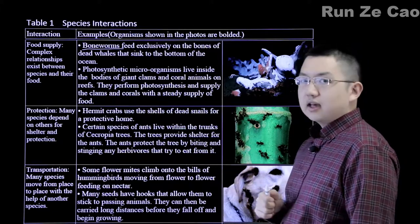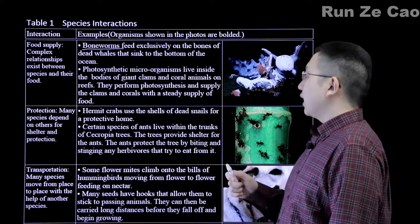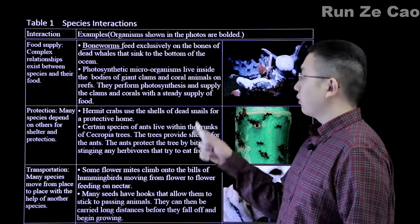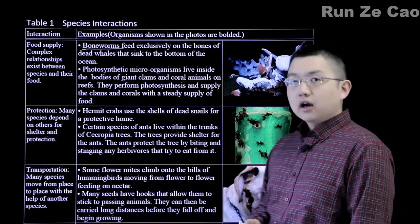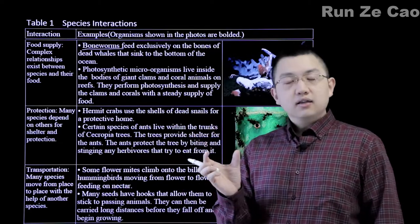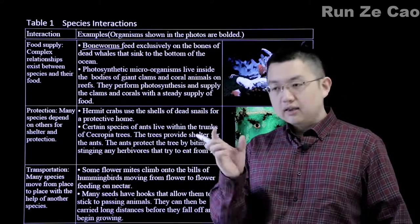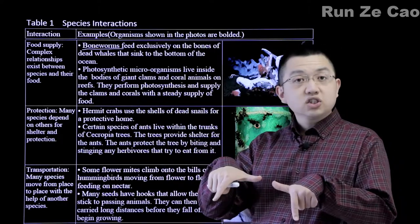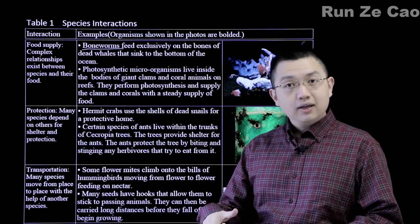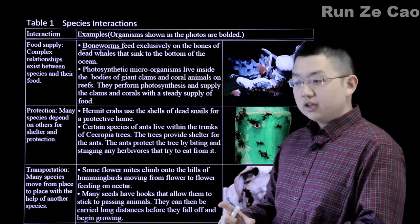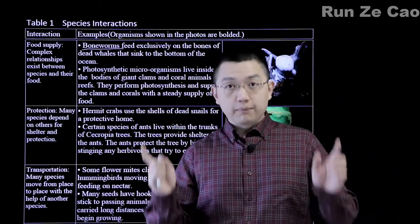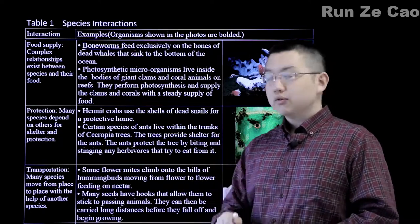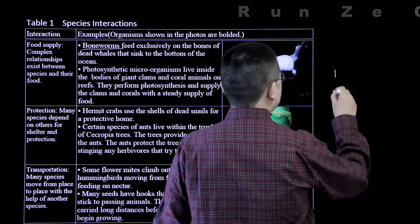Photosynthetic microorganisms live inside giant clams and corals. Corals, by the way, are not plants or fungi. They are animals — basically tiny sea anemones if you look at them closely. Whereas jellyfish are a medusa form, corals include their polyp forms, which essentially act like an upside-down medusa, except planted in place.